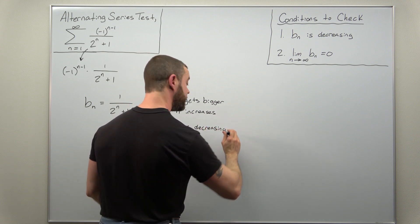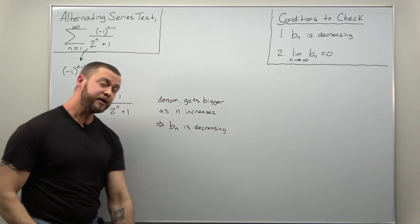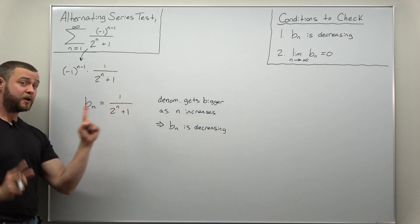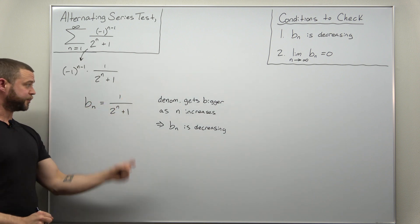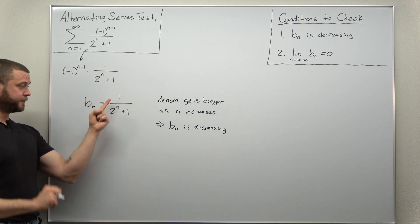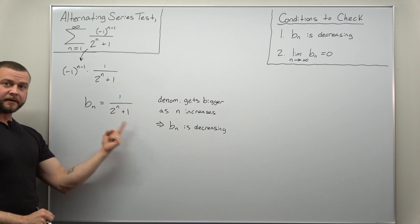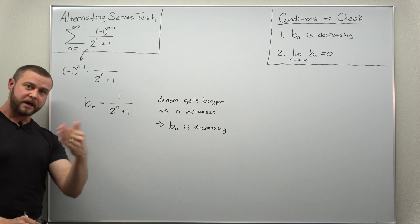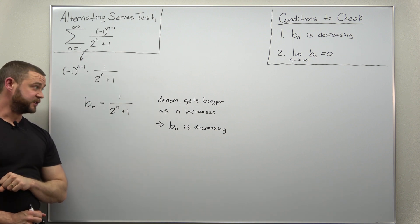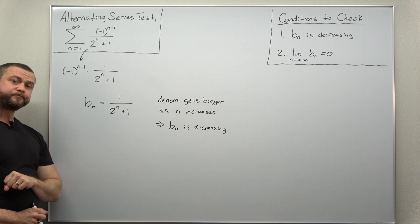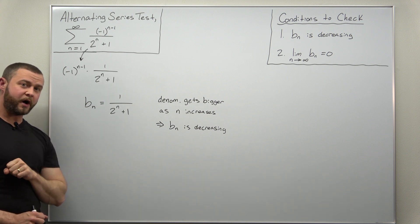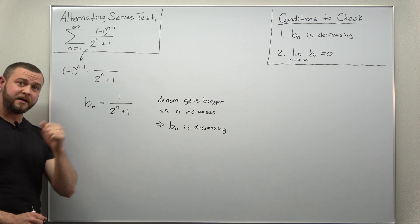All right, that only works here because this B sub n term was rather simple — a constant one divided by an expression that is getting bigger as n increases. So condition one is verified.